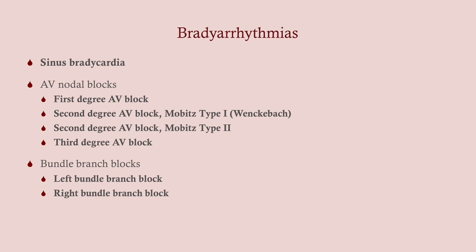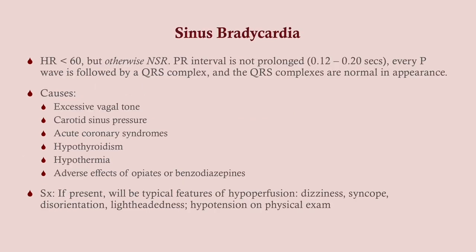Bundle branch blocks don't always cause bradycardia but can, so they're included here. Sinus bradycardia is simply a slow heart — it can be normal or abnormal. The EKG will otherwise be normal: normal PR interval, normal QRS complexes. Causes include hypothyroidism and medications. If symptoms are present, they'll relate to hypoperfusion from decreased cardiac output — dizziness, syncope, lightheadedness, and fainting.